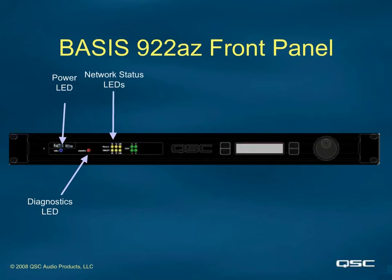Network status LEDs: three to six LEDs will let you know both the QSC control and CobraNet network connection status. There may be six LEDs because there are two Ethernet connectors on the rear of the Basis — one dedicated for QSC control and one for CobraNet. For those Basis products that connect directly to QSC amplifiers, data port LEDs display whether there is an amplifier connected to each port, even if the amplifier is turned off.